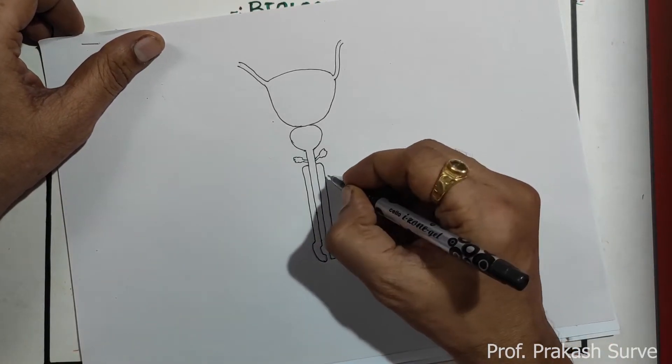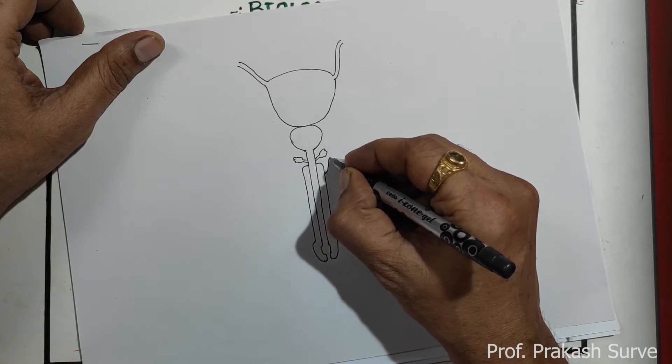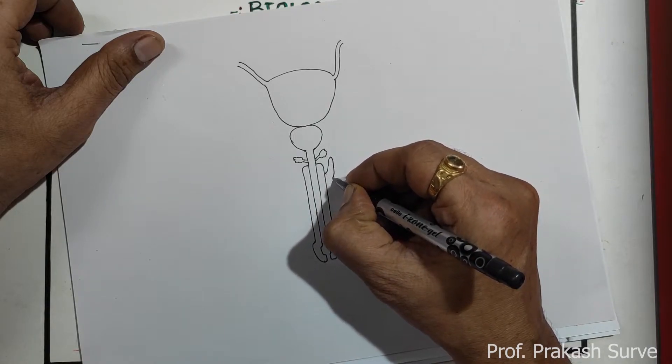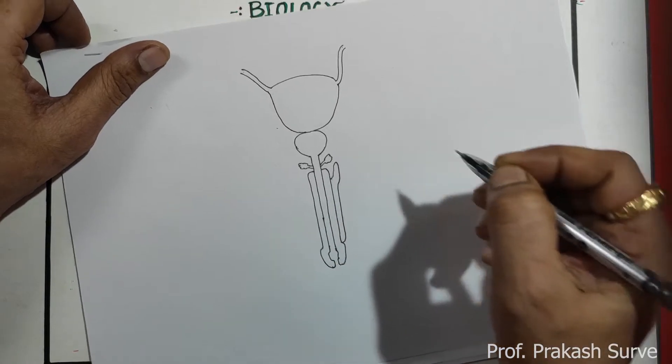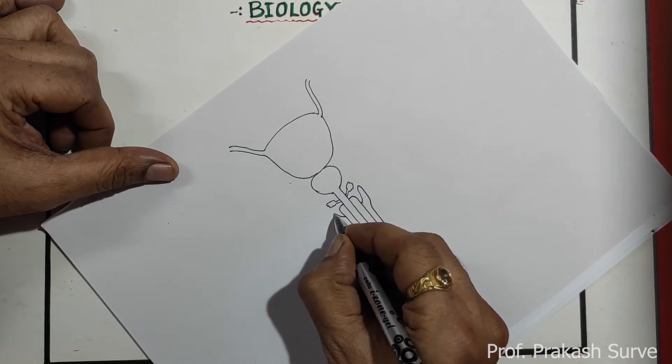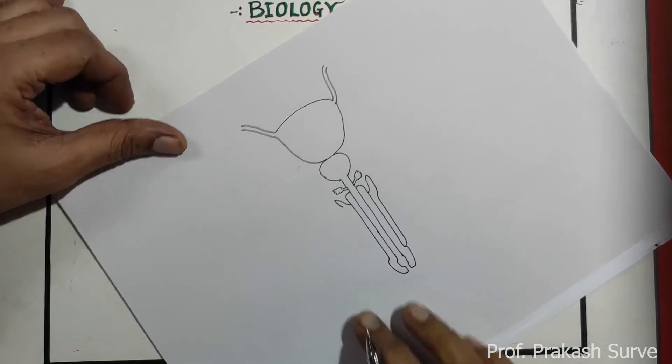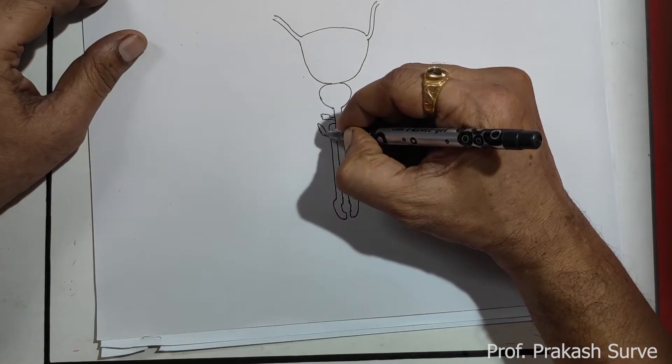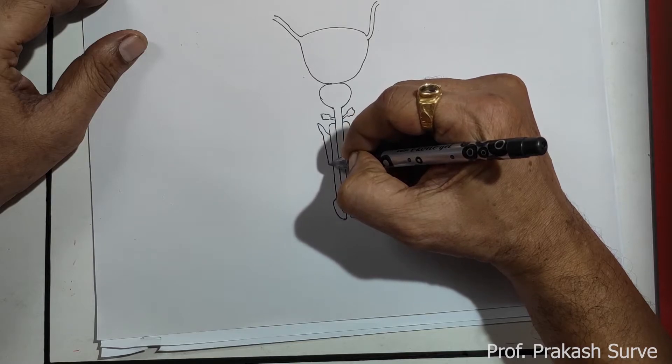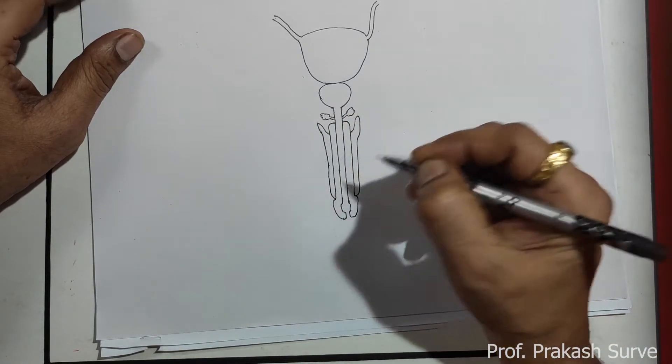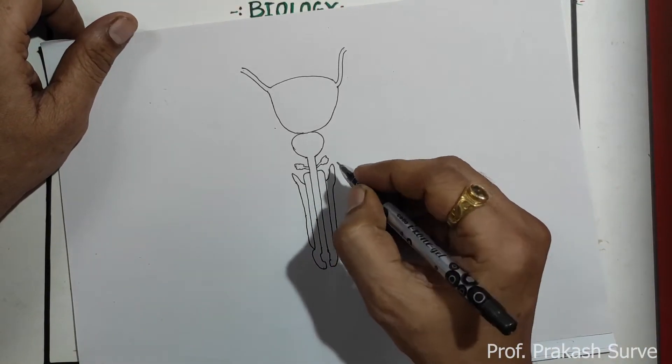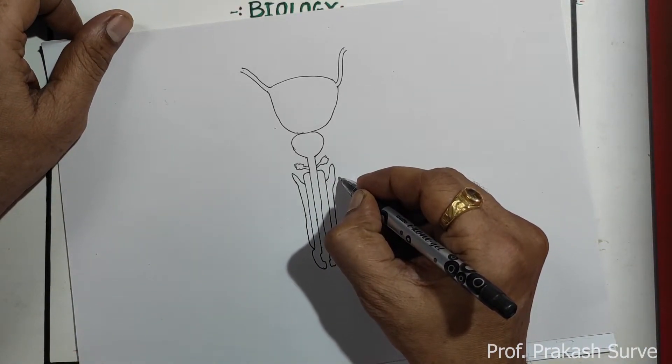Draw here another structure parallel to this, attach here, same way parallel to this. Bring it down and attach here. Now here draw the skin.